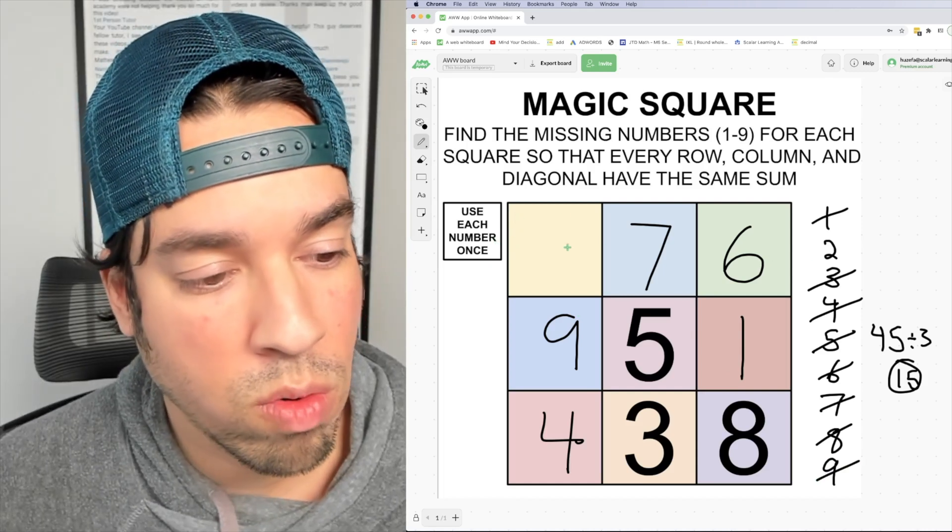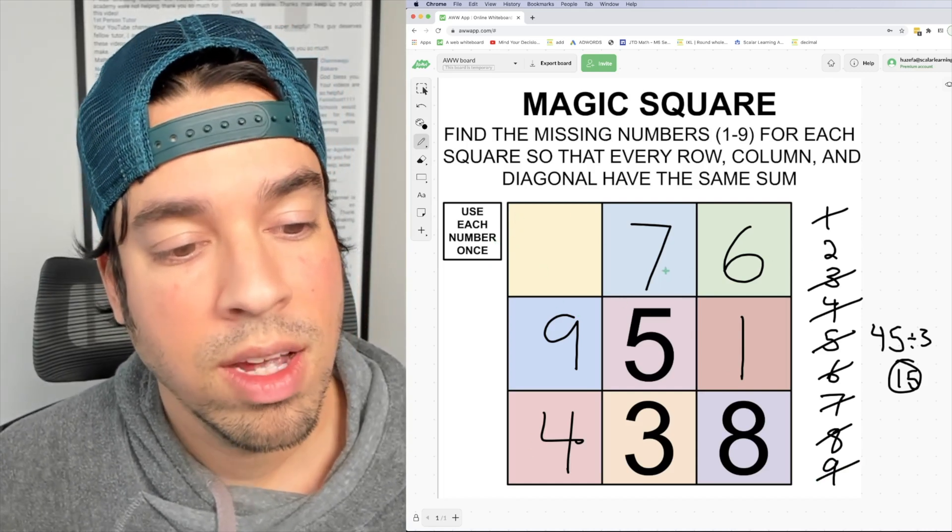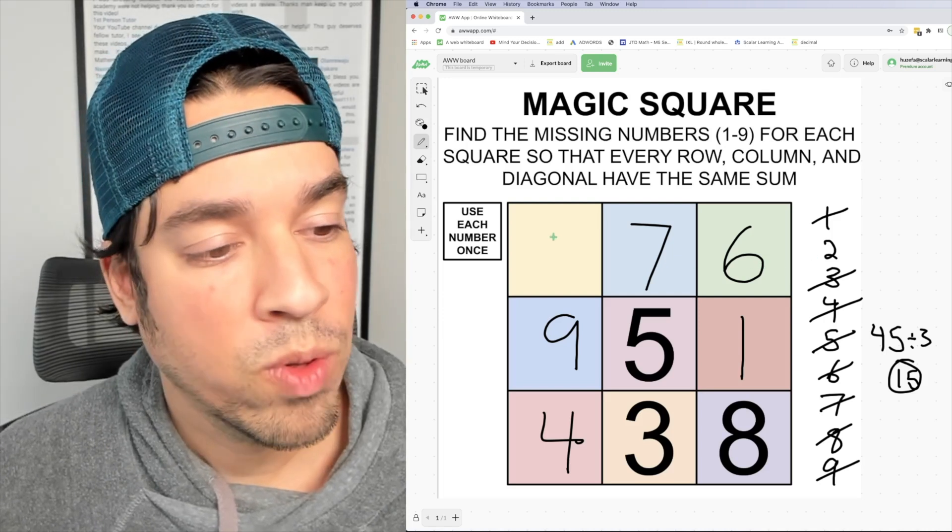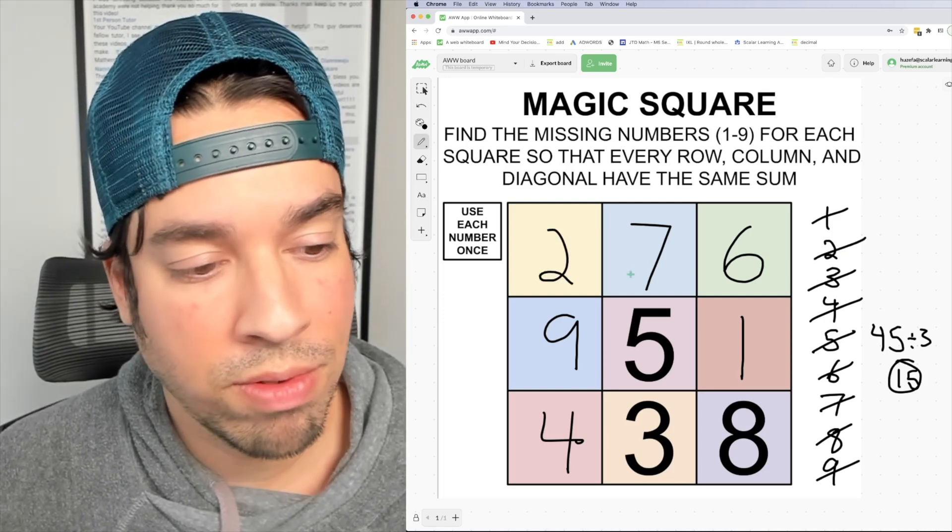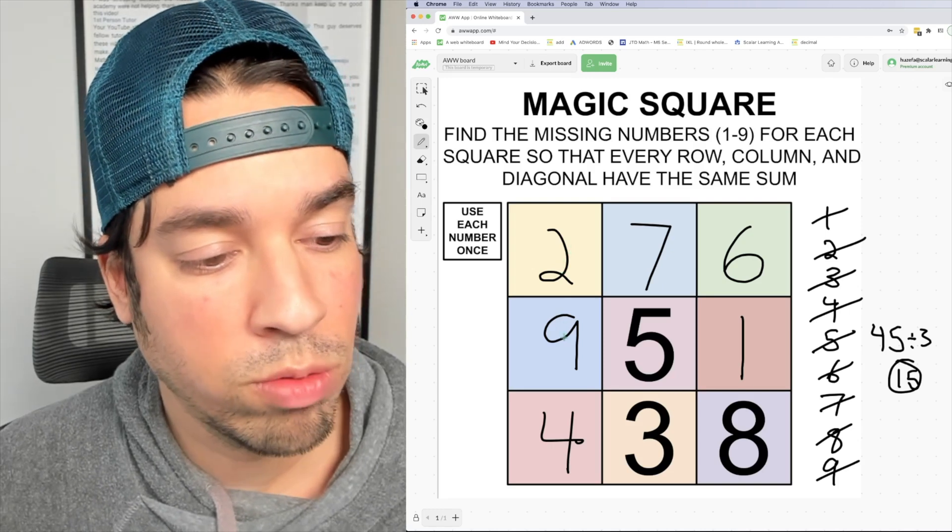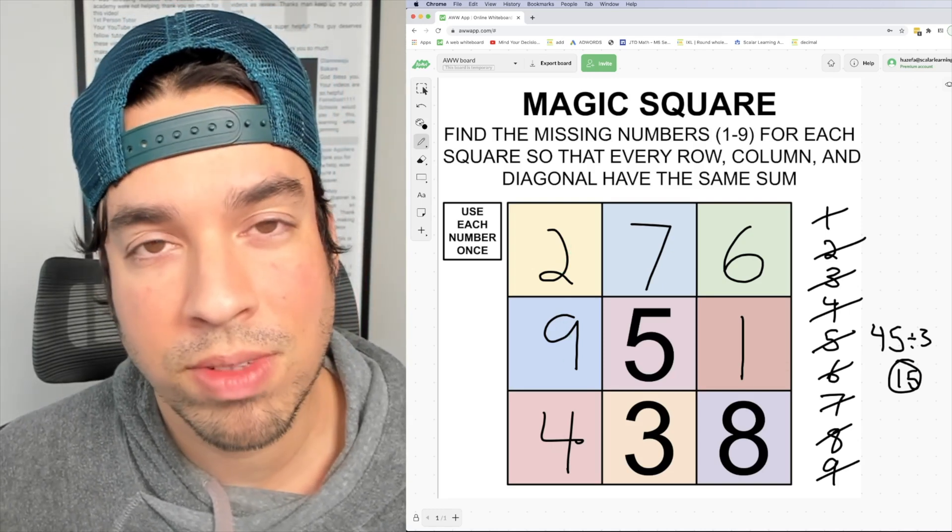I can either look at this row or this column. Either way works. Seven plus six is 13, with two will make 15, and you can see it works this way as well. Two plus nine is 11 plus four is 15.